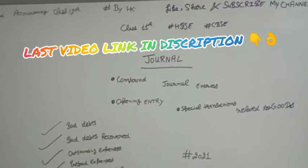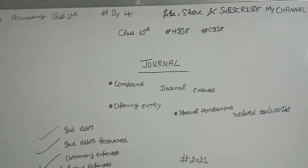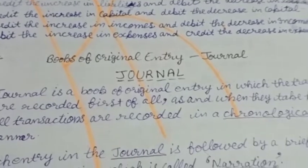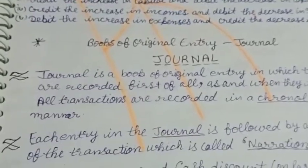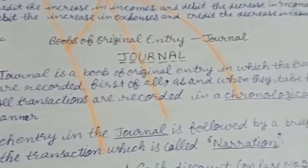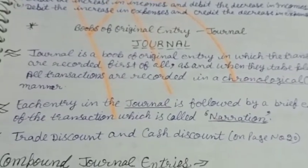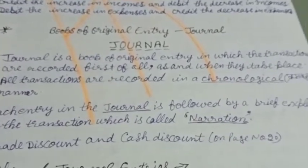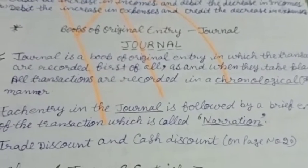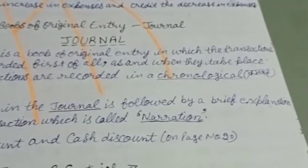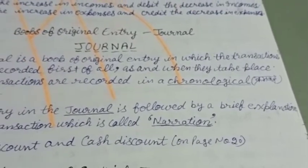We will find out about the journal — the book of original entry. A journal is a book of original entry in which transactions are recorded first of all, as and when they take place.